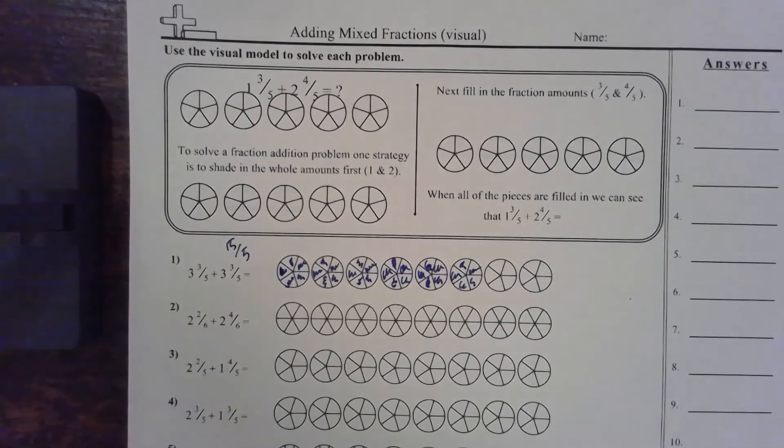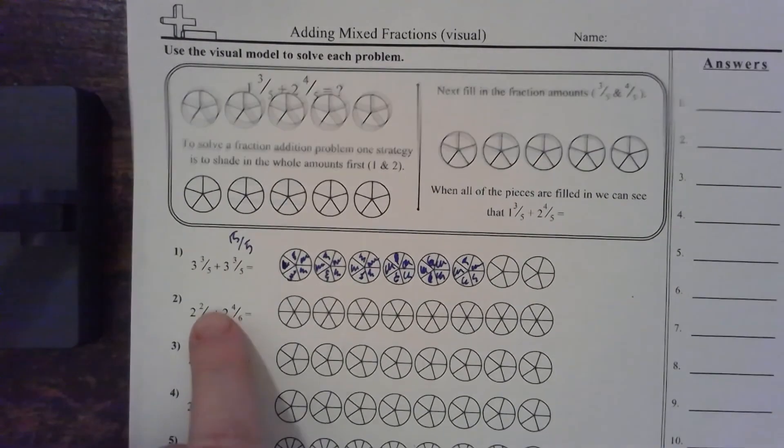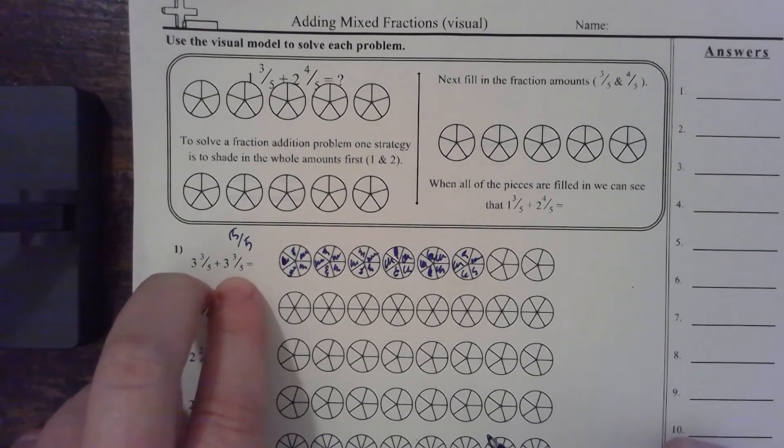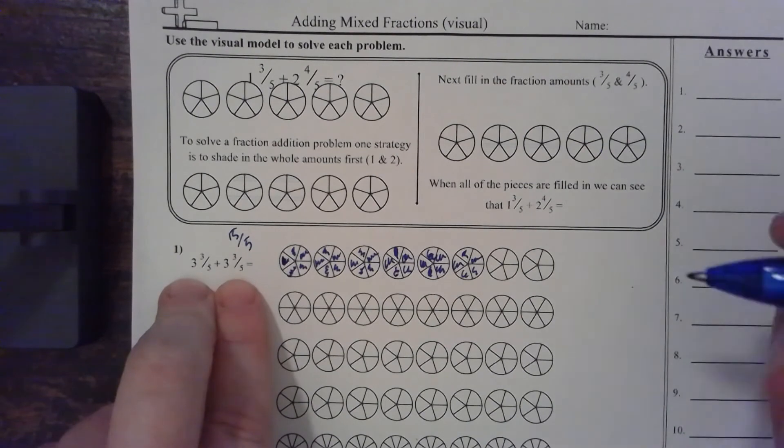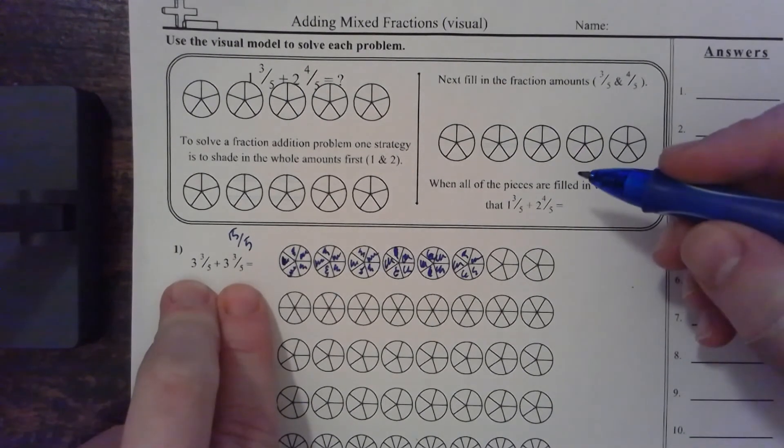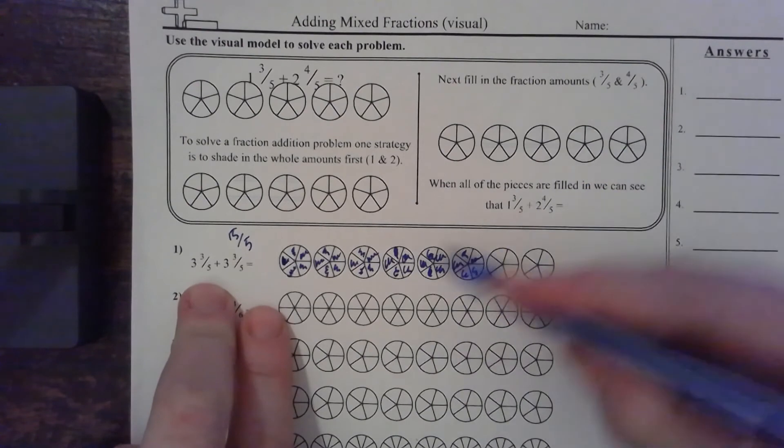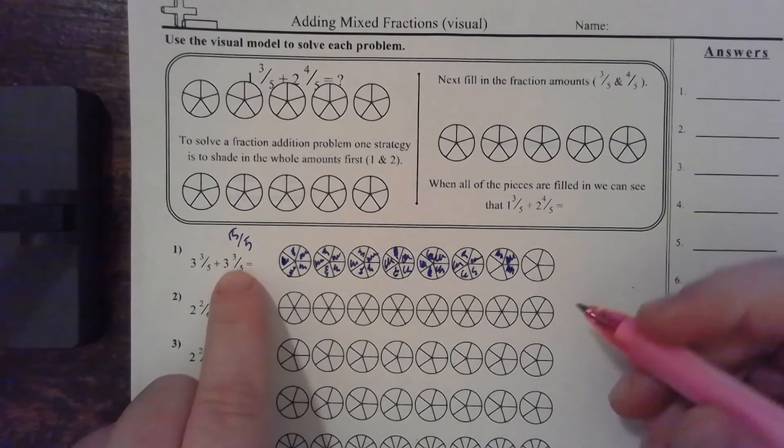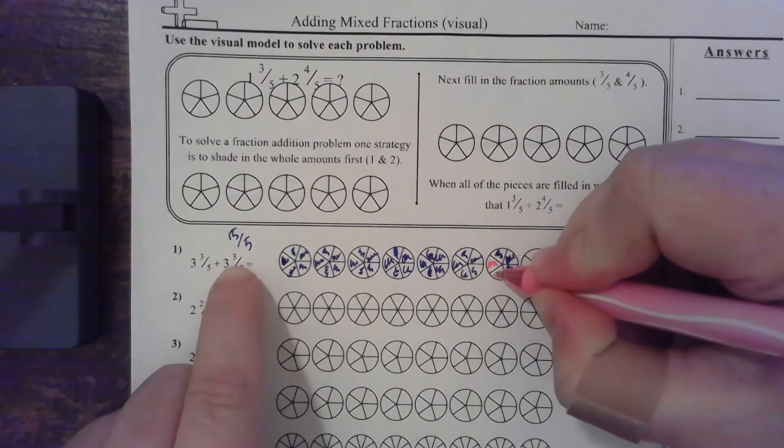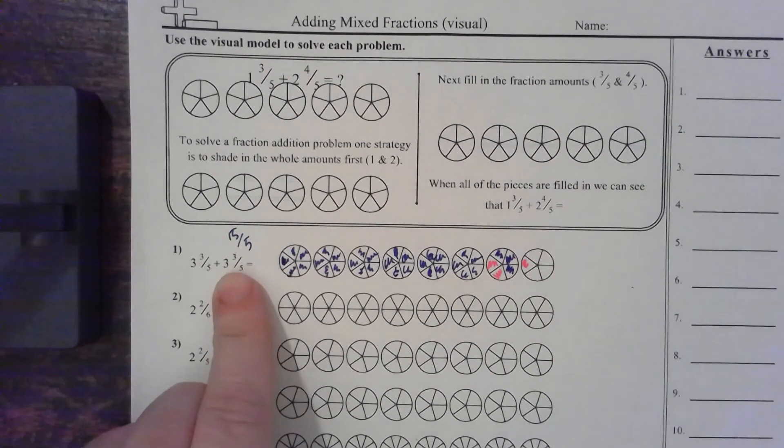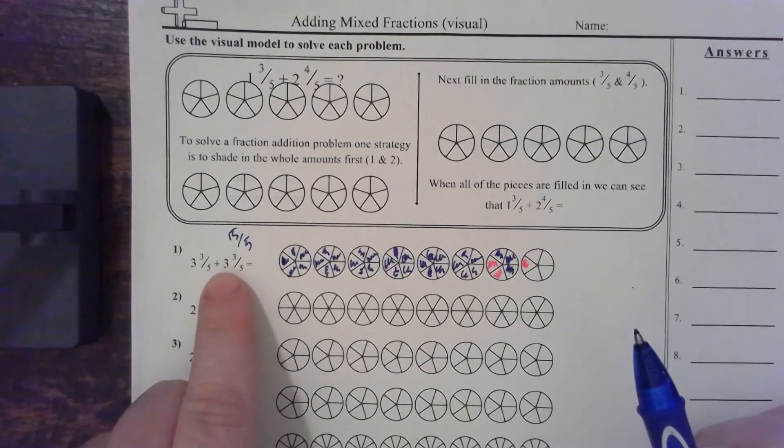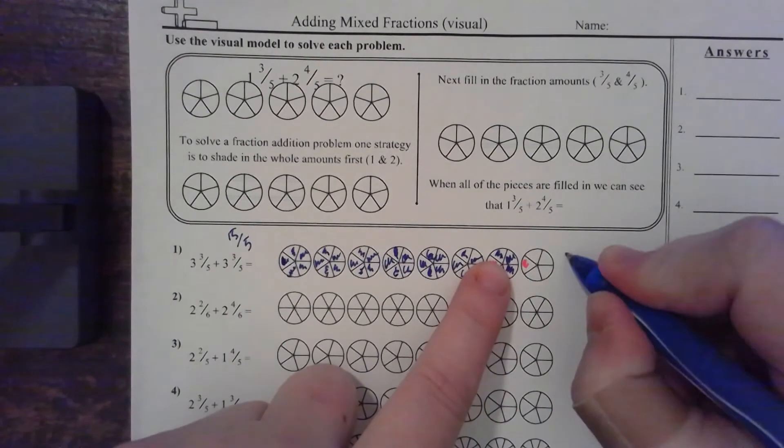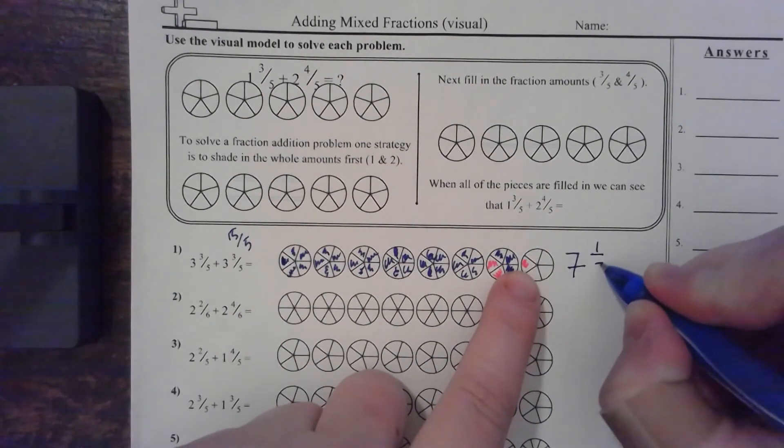Then, it's asking me to add three-fifths plus three-fifths. Now, we already have common denominator, so we don't have to worry about fixing it. So, what we're going to do is we would do three-fifths, and then I'm going to use a different color just to show it. And then, I would color in another three-fifths. So, we can say that three-fifths plus three-fifths equals one, two, three, four, five, six, seven, and one-fifth.